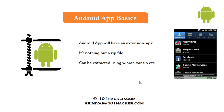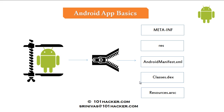It means it can be extracted using normal extraction softwares like WinRAR, WinZip, or 7-Zip etc. When we extract this application using any of these softwares, we can actually look at the components that are used to build this application. When we extract the application, these are the components that we can see: meta-inf, res, android-manifest.xml, classes.dex, and resources.arsc.